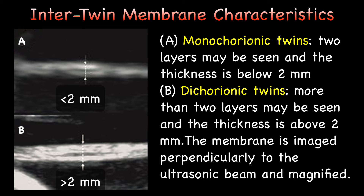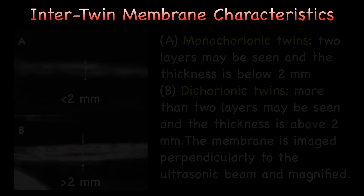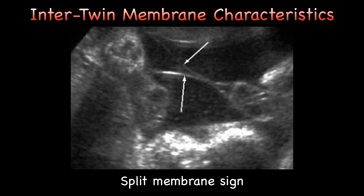The characteristics of the inter-twin membrane can also help determine chorionicity. The inter-twin membrane of a dichorionic pregnancy consists of two layers of amnion and two layers of chorion — it is thicker and more reflective than the monochorionic diamniotic membrane. A membrane thickness of greater than 2 mm identifies dichorionicity, whereas membrane thickness less than 2 mm suggests monochorionicity. The membrane should be imaged perpendicularly to the ultrasound beam after magnification. In the second trimester, if there are more than 2 membranes counted, dichorionicity is strongly suggested — this is known as the split membrane sign, as seen here.